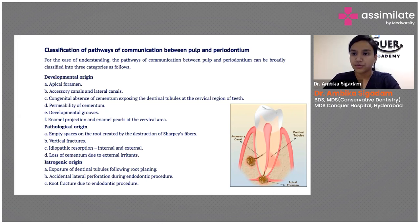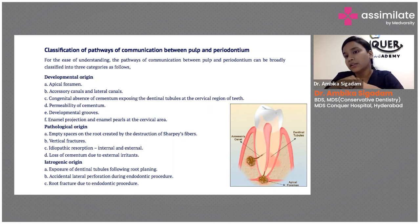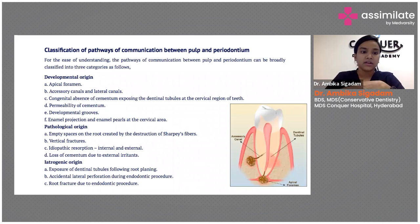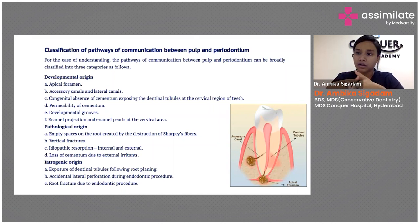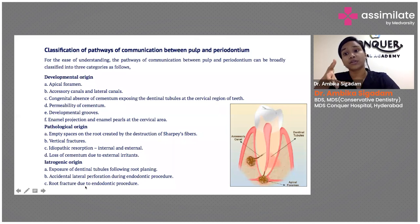When performing curettage or root planing, you could accidentally expose dentinal tubules, creating a pathway between your pulp and the periodontium. Accidental lateral perforations when attempting endodontic procedures can also create a pathway to the periodontium.